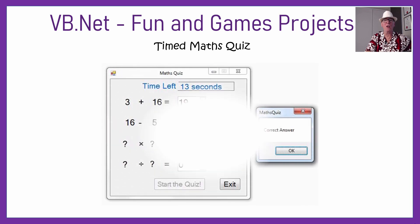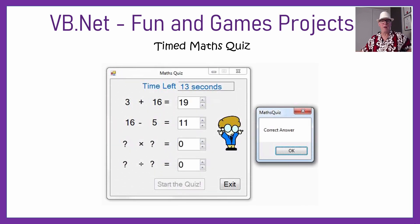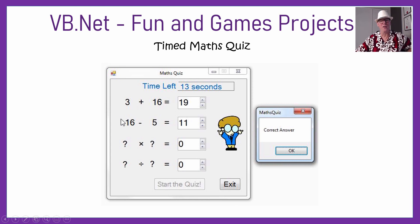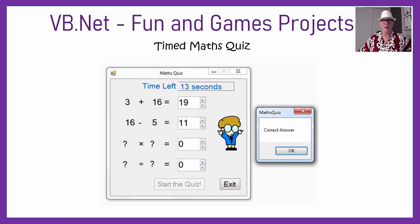The timed maths quiz — about the only chance you've got of making maths any fun at all. You can set the difficulty of the sums that have to be done. That's an interesting project because we can't just let it pick any numbers for dividing, because 19 divided by 11 is going to be too hard to do in a timed maths quiz. There's some interesting programming there as well, using random numbers.